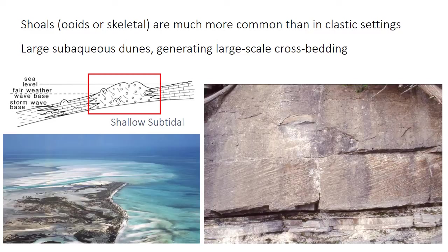The shallow subtidal environment, above fair weather wave base, has a variety of facies depending on conditions on the ramp — whether it's storm dominated or not, whether there's substantial tidal influence or not — not too dissimilar from siliciclastics. But one thing commonly found on carbonate ramps that is not so common on clastic shelves are shoals, which are basically large sandbars or dunes made of ooids or skeletal fragments. Subaqueous dunes like this do occur on clastic coastlines — we talked about longshore-dominated dunes in the shoreface environment.